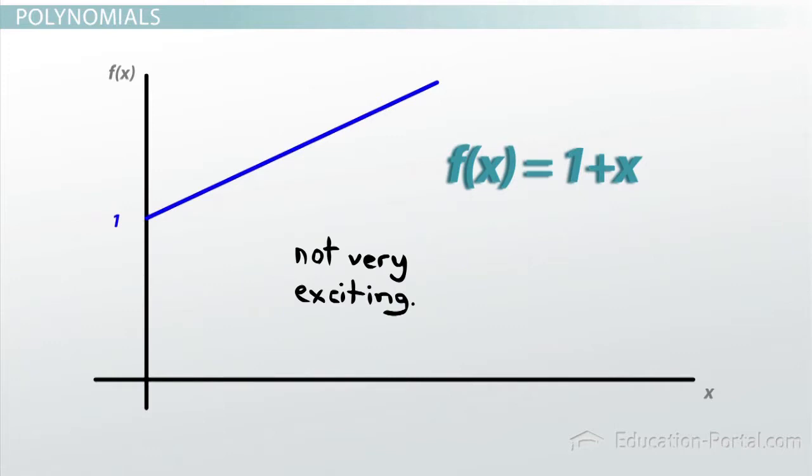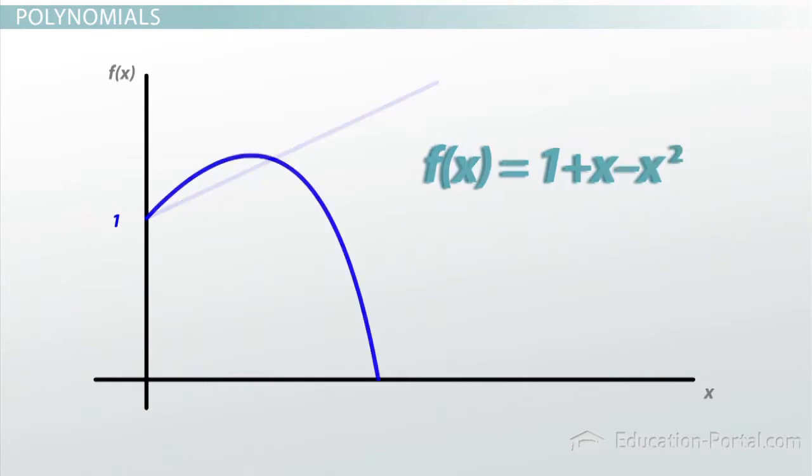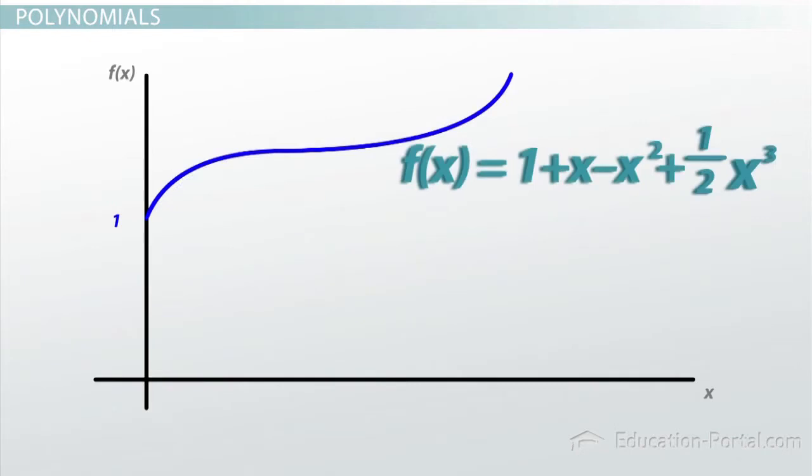At least it's got a little bit of variation to it. It doesn't just stay at 1. At some places it's 2. We could make this function a little more interesting by subtracting x squared from it. Now we're getting somewhere. We can make it even more interesting by adding to that 1 half x cubed. Now we're starting to get somewhere.